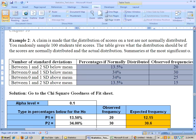On this example, a claim is made that the distribution of scores on a test are not normally distributed. You randomly sample 100 students' test scores and the table gives what the distribution should be if the scores are normally distributed and the actual distribution, summarized at the most significant alpha level.